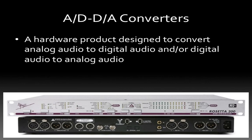Let's go back to the slide where I showed you the Apogee and look at that. On the back, we can see the audio I/O. This is your analog in and out, and it's on XLR. Here is your digital output, and it's AES-EBU on XLR cables.